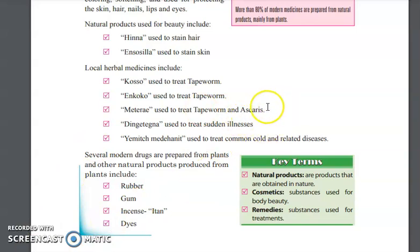Endakua is used to treat tapeworm and ascaris. Dingetegna is used to treat sudden illnesses. Dama danit is used to treat common cold and related diseases.